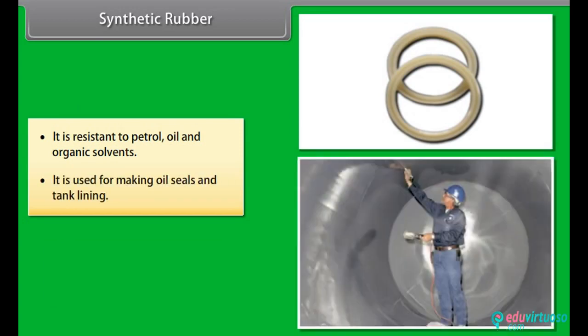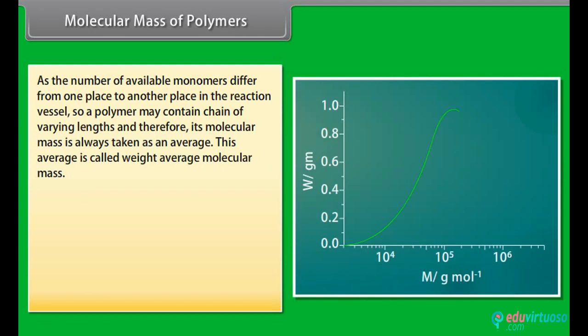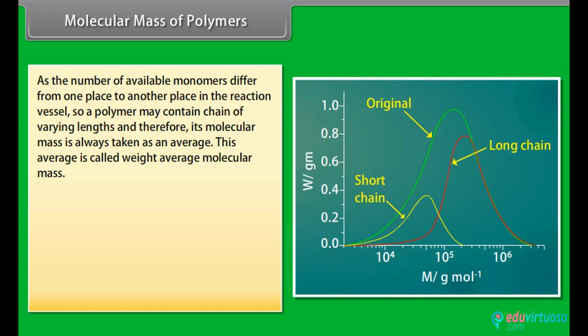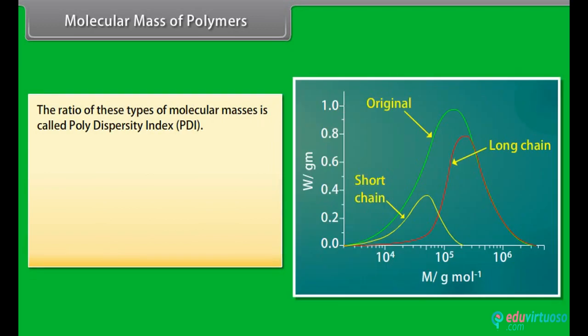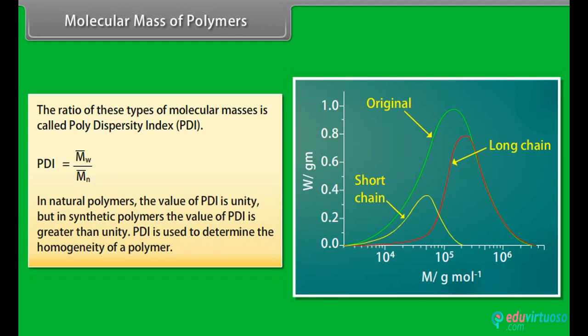Molecular mass of polymers: during the formation of polymers, the growth of the polymer chains depends upon the number of monomers available in the vicinity. As the number of available monomers differs from one place to another in the reaction vessel, a polymer may contain chains of varying lengths and therefore its molecular mass is always taken as an average, called the weight average molecular mass. The ratio of these types of molecular masses is called the polydispersity index (PDI). In natural polymers, the value of PDI is unity, but in synthetic polymers, the value of PDI is greater than unity. PDI is used to determine the homogeneity of a polymer.